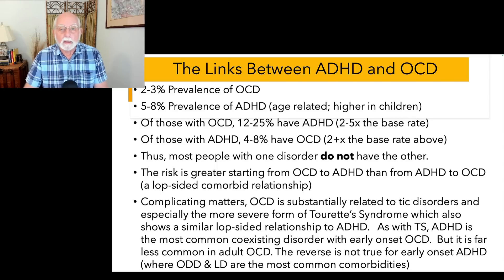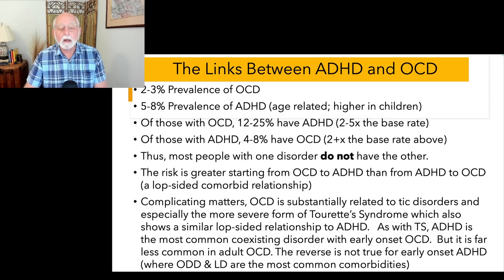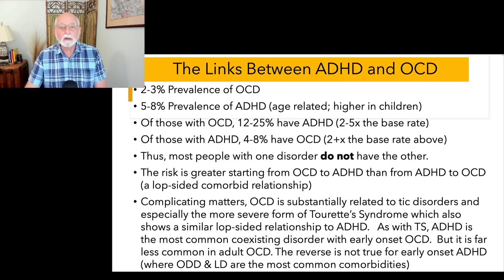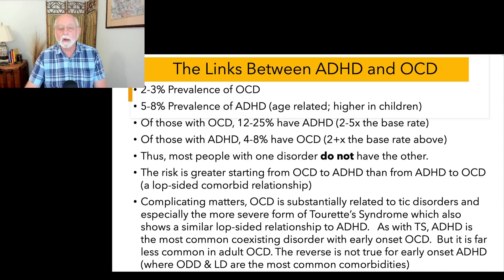That is, ADHD is more common in OCD than in the general population, but it is far less common than we see in adult OCD. The most common comorbidity in ADHD is oppositional disorder and learning disabilities in childhood, and then by the time we get up to adulthood, it's anxiety, depression, antisocial personality, and substance use disorders among others.